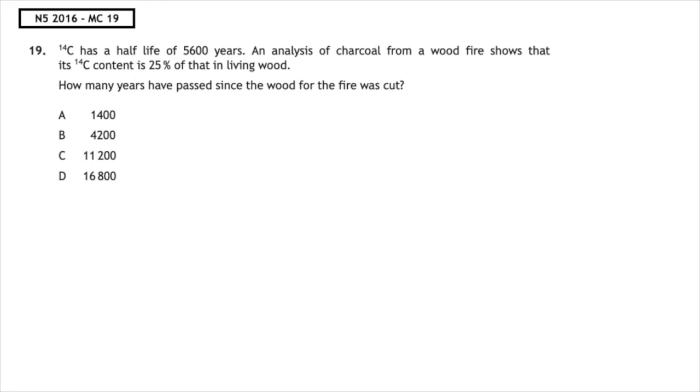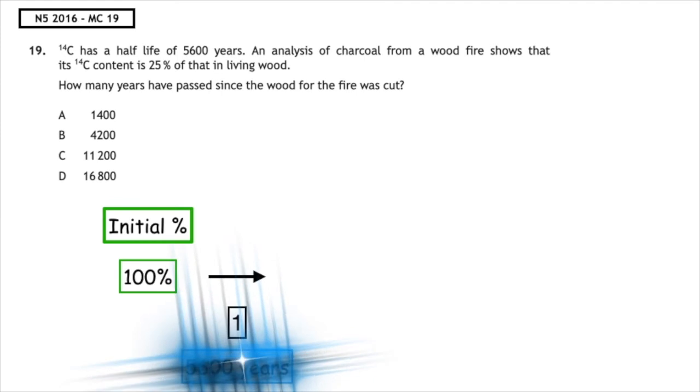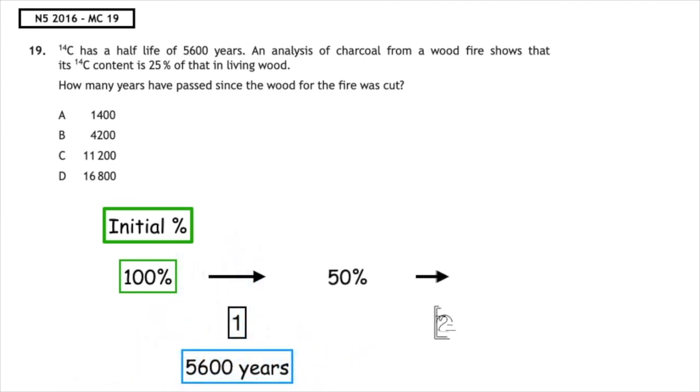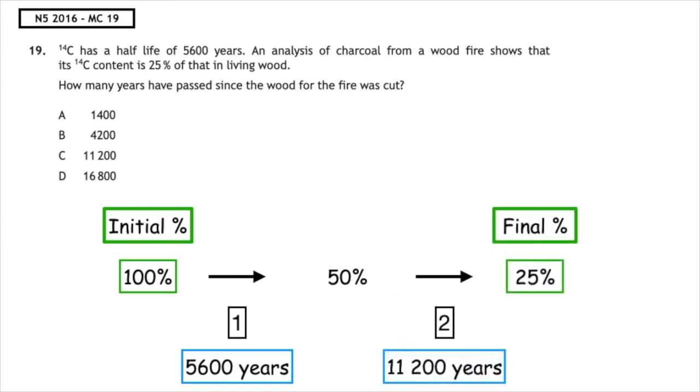So we know the unit we're working in is percentage and the initial percentage is always 100%. If it underwent one half-life, that would be a total of 5,600 years and give us 50%. That would have to undergo a second half-life, which would give us a total of 11,200 years, which will give us our final percentage of 25%. So the correct answer to this question is C, 11,200.